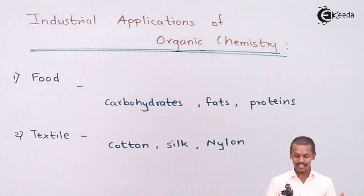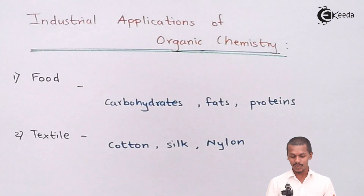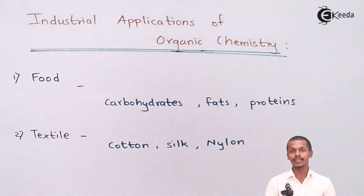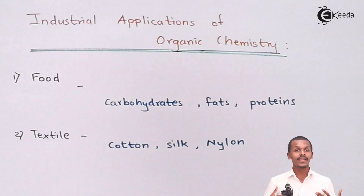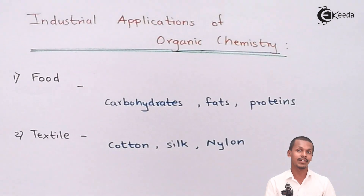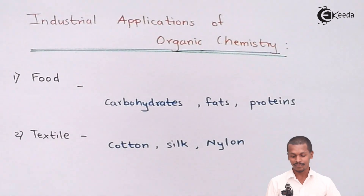Talking about the next one — textiles. The clothes that we wear are basically cotton or silk, and there are also semi-synthetic materials used in the textile industry such as nylon and rayon. These are basically organic products that we apply in our day-to-day life.